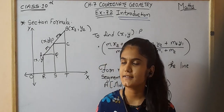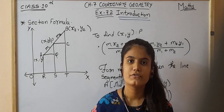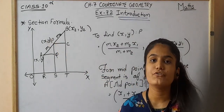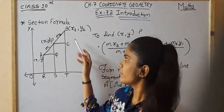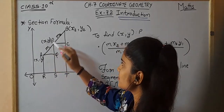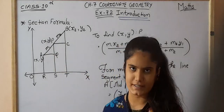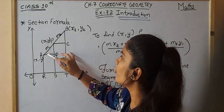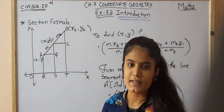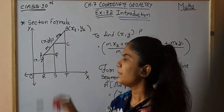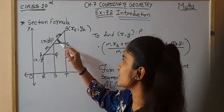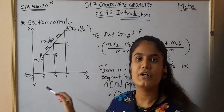Today we are going to start Exercise 7.2. The introduction is the section formula. In Exercise 7.1, we had to find the distance between points A and B. In Exercise 7.2, if a line segment is divided by any point, suppose P, we have to find the coordinates of P, which are x and y, using the ratio m1 and m2.